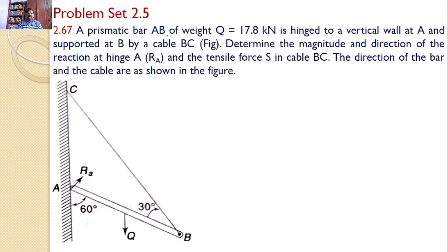A prismatic bar AB of weight Q equal to 17.8 kN is hinged to a vertical wall at A and supported at B by cable BC as shown in the figure. Determine the magnitude and direction of the reaction at hinge A and the tensile force S in the cable BC. The direction of the bar and the cable are shown in the figure.